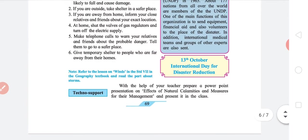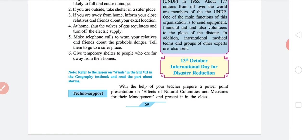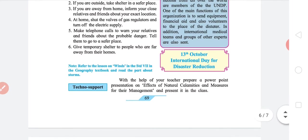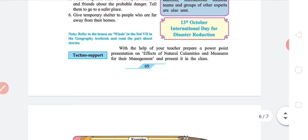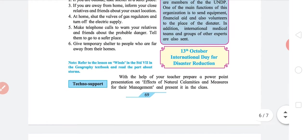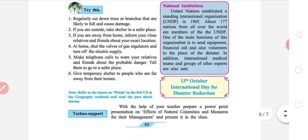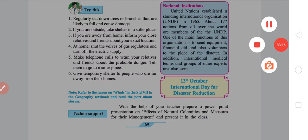Fifth, make telephone calls to warn your relatives and friends about the probable danger. Tell them to go to a safer place. Sixth, give temporary shelter to people who are far from their home. You will learn about the UNDP in the national situation's headline, and 13th October is international day for disaster reduction. I think everything is fine. Thank you.